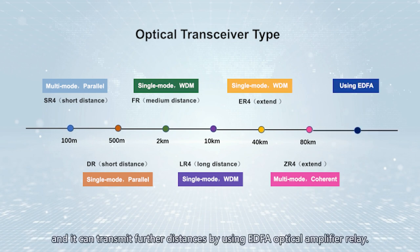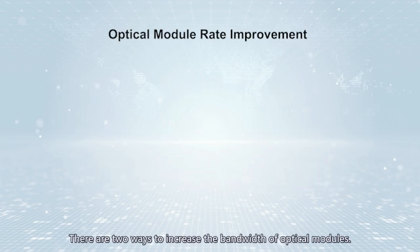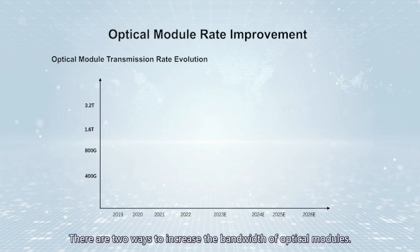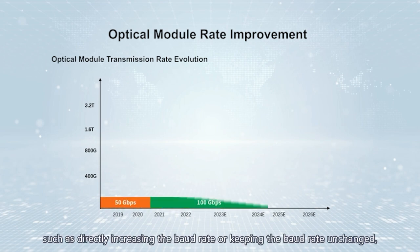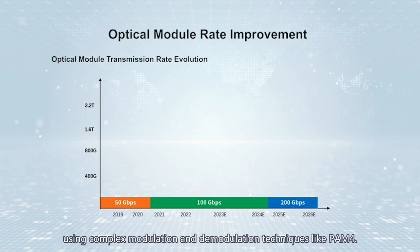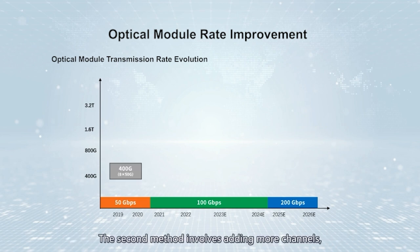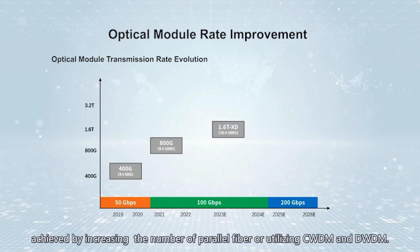ZR4 can transmit further distances by using EDFA optical amplifier relay. There are two ways to increase the bandwidth of optical modules: the first is to increase the bit rate of each channel, such as directly increasing the baud rate or keeping the baud rate unchanged using complex modulation and demodulation techniques like PAM4. The second method involves adding more channels, achieved by increasing the number of parallel fibers or utilizing CWDM and DWDM.